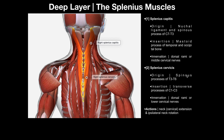The splenius cervicus is going to originate right where the splenius capitis leaves off — on the spinous processes of T3 down to T6. Then it's going to insert on the transverse processes of C1 to C3. Remember, C1 is the atlas, C2 is the axis, and C3 is just C3. Notice that from the spinous processes this muscle appears to move laterally, and laterally is where we would have the transverse processes.